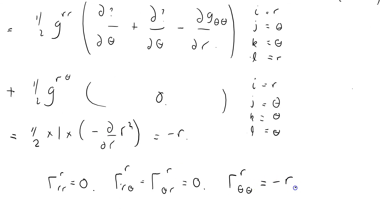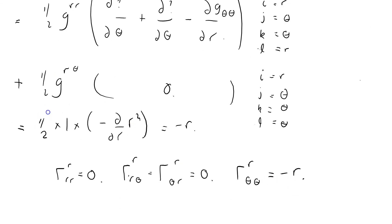So we have one-half times g^rr equals 1, times minus ∂/∂r of g_θθ, which is r². That gives minus one-half times 2r, which equals minus r. So Γ^r_θθ = −r.